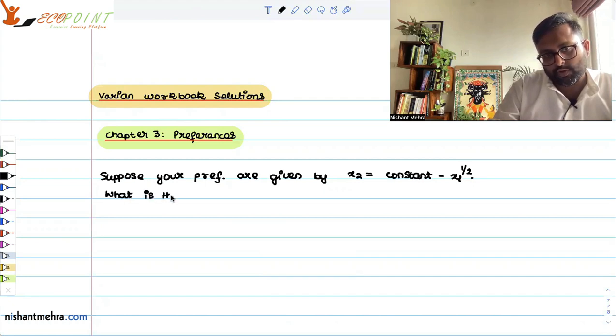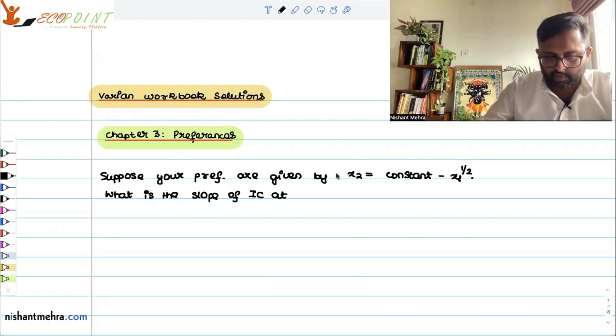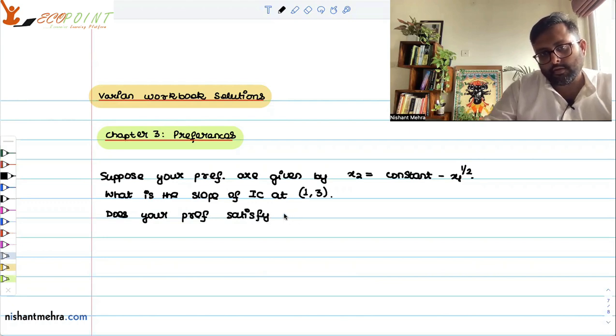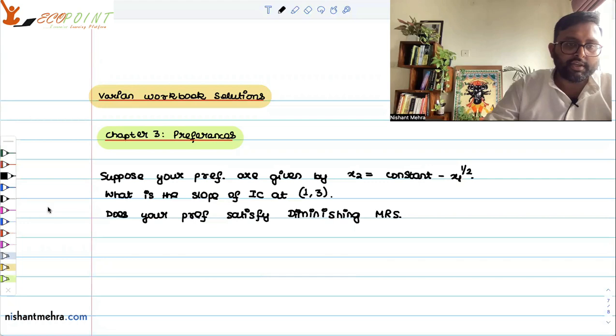The question is, what is the slope of the indifference curve at (1,3)? And does your preferences satisfy diminishing MRS?